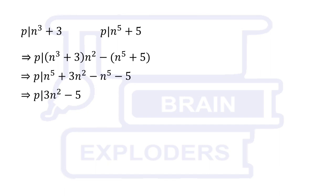You can see that another term is obtained which is divisible by p, but this time exponent of n is less than both of previous exponents.